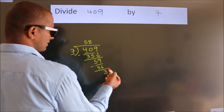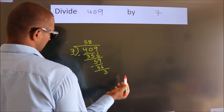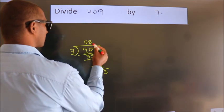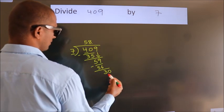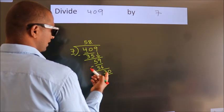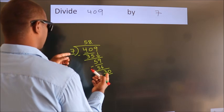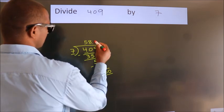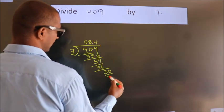After this, no more numbers to bring it down. So what we do is, we put dot take 0. So 30. A number close to 30 in 7 table is 7 fives, 28.